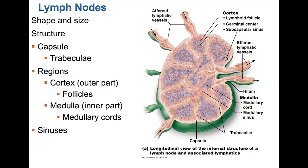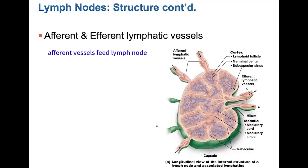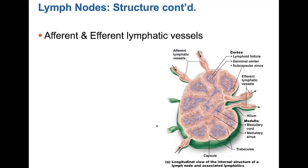The sinuses are lymphatic capillaries that have reticular fibers crisscrossing them. Within the sinuses, you'll find macrophages waiting to come in contact with pathogens as the lymph flows through. The subcapsular sinuses are located right underneath the capsule and receive lymph from the afferent lymphatic vessels. The lymph continues into medullary sinuses located within the medulla, and from there moves into efferent lymphatic vessels. Afferent collecting vessels feed the lymph nodes, while efferent collecting vessels drain them. There are more afferent than efferent collecting vessels, which helps slow the flow of lymph through the lymph node, allowing macrophages to filter the lymph and lymphocytes to encounter their antigens.